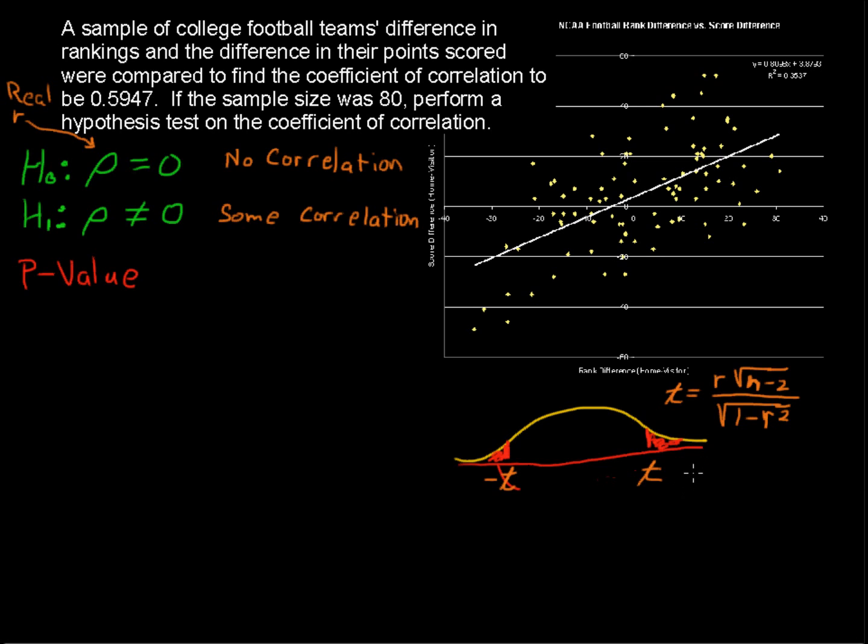So that's how you would find t. So we have equals, for our data, 0.5947 times the square root of n minus 2 would be 78, sample size minus 2, over the square root of 1 minus 0.5947 squared.